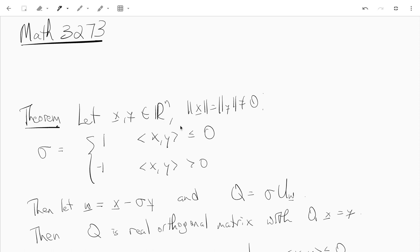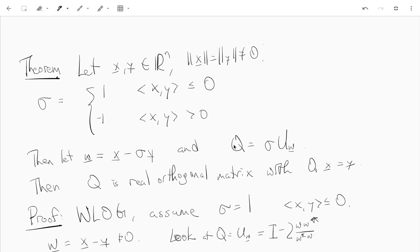Okay, hi everyone. For this video we're going to be talking about Householder matrices and how they're used when we have two vectors of equal length. We can find basically a Householder matrix that transforms one into the other. So that is captured in this theorem.